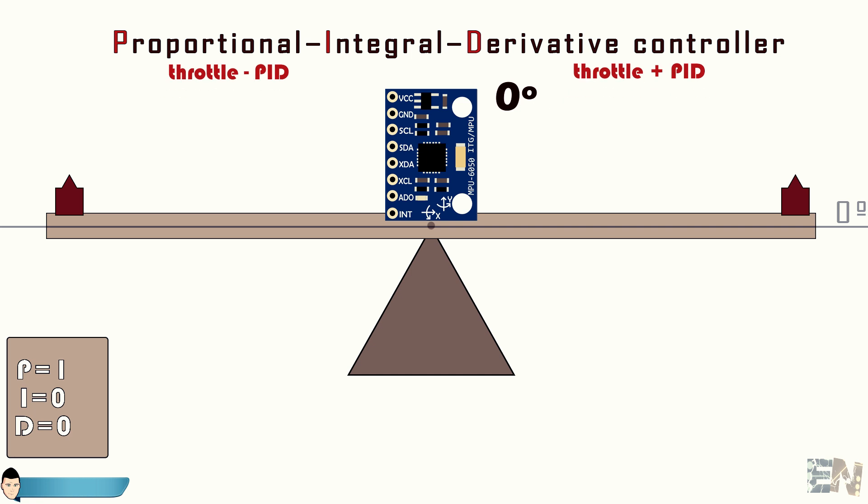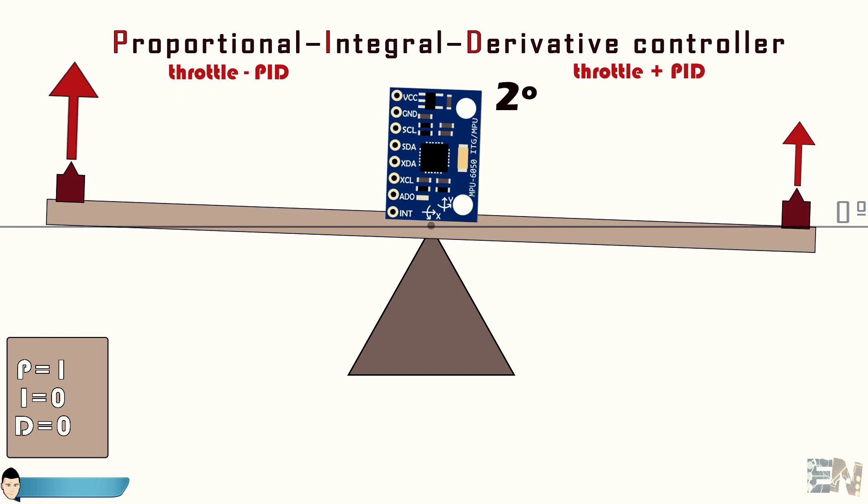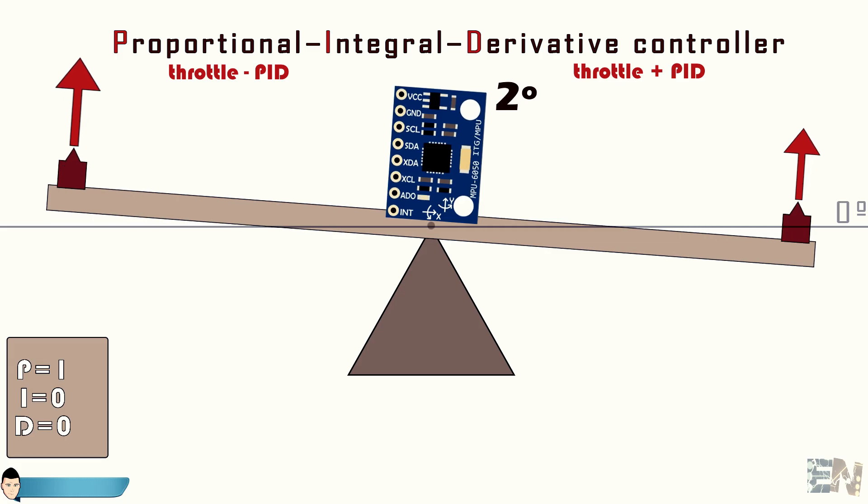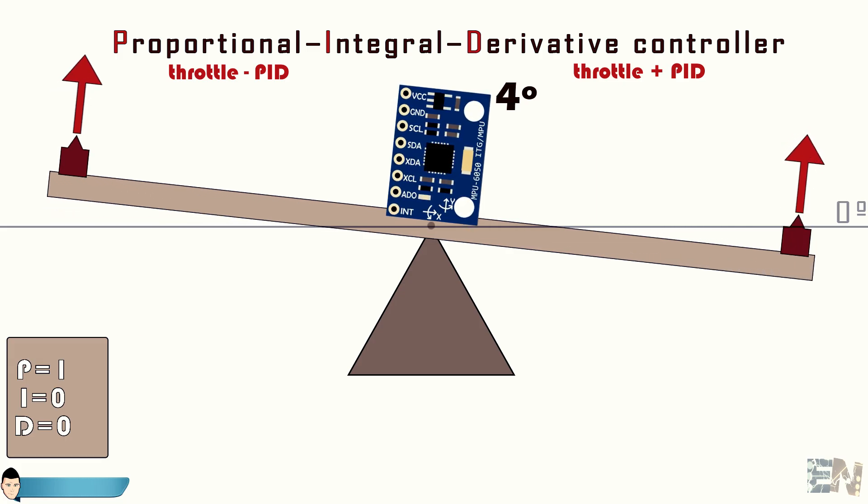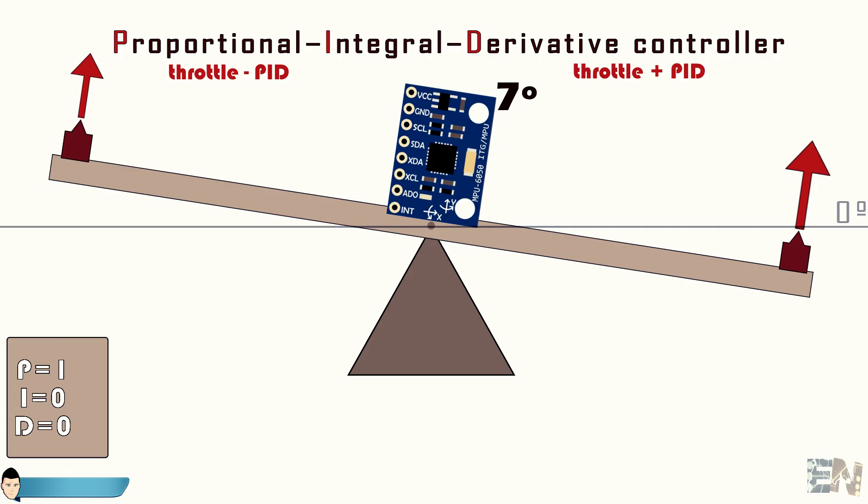We power up the system and let's say that at the beginning the left motor will push a little bit harder making the metal bar lean to the right.